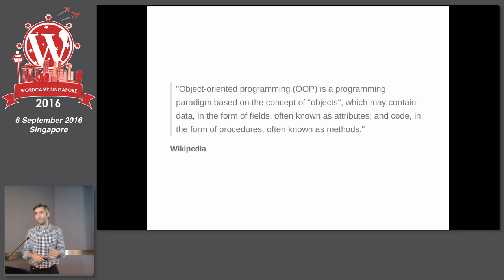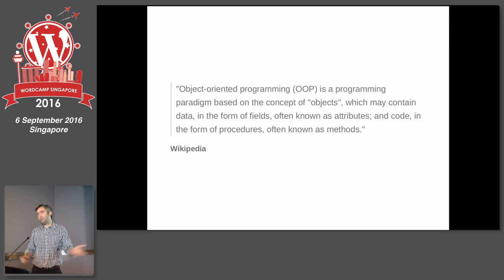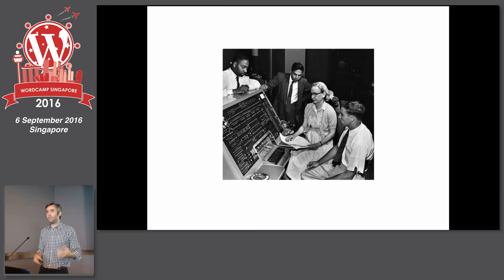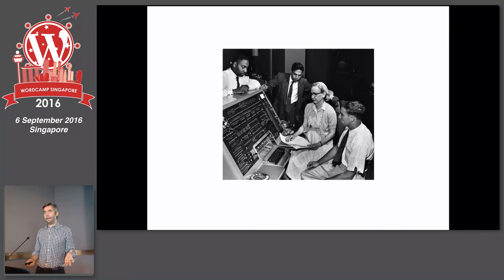The main thing to take away from this definition is this idea about objects — that our code is going to be packaged up in objects, unlike other types of programming where you might just have loads of code generally doing all sorts of different things. Object-oriented programming started to become a thing with roots in the 1940s and 1950s — this is Grace Hopper, this is programming in the 50s.